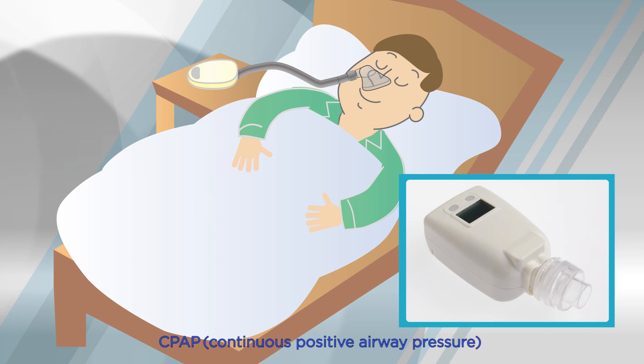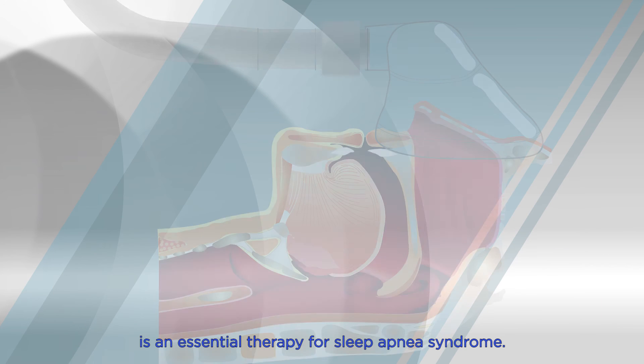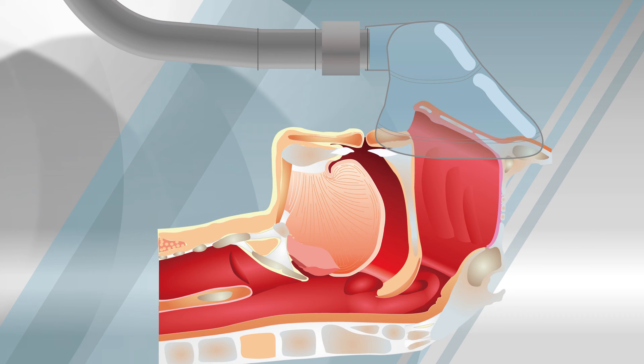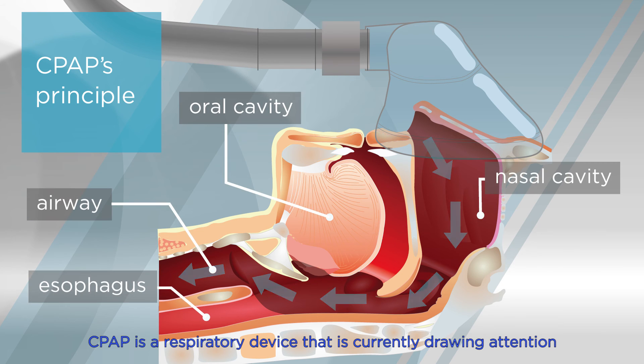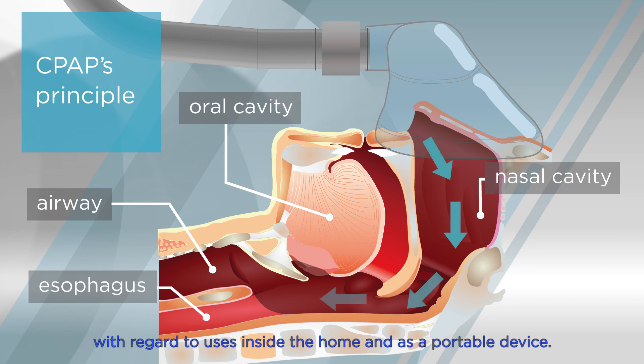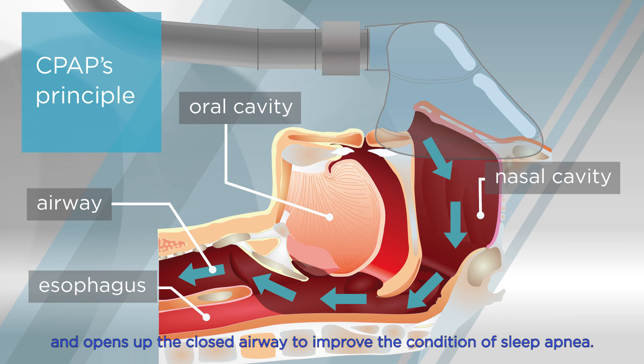Micro blowers are used in CPAP. CPAP, Continuous Positive Airway Pressure, is an essential therapy for sleep apnea syndrome. CPAP is a respiratory device that is currently drawing attention with regard to uses inside the home and as a portable device. It sends mechanically pressurized air from the nose to the airway and opens up the closed airway to improve the condition of sleep apnea.